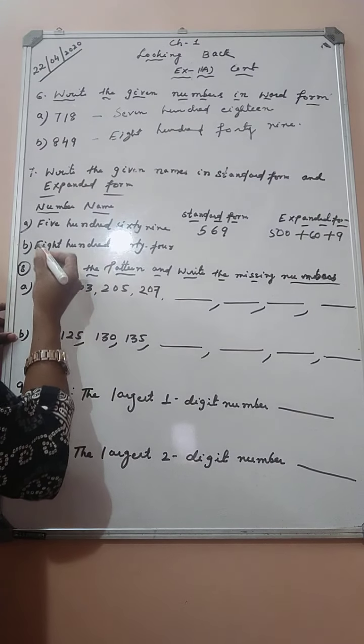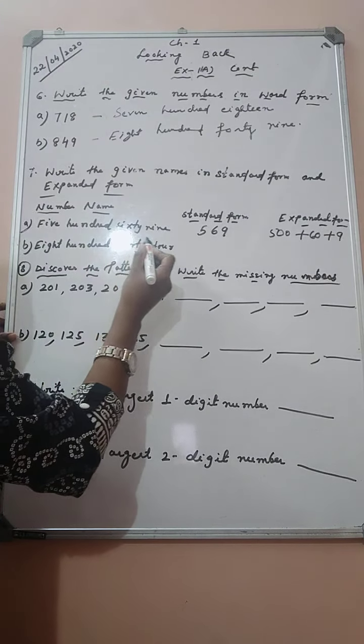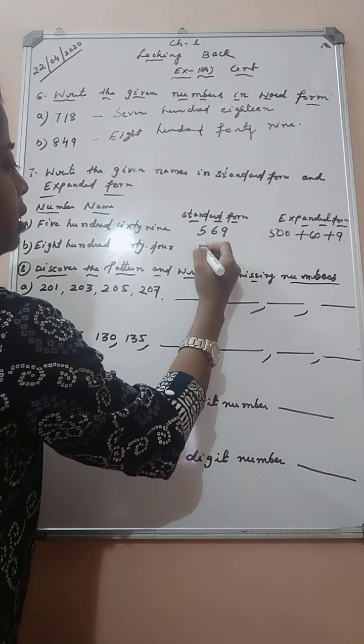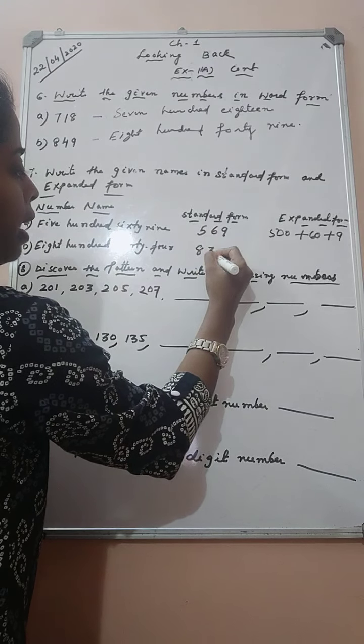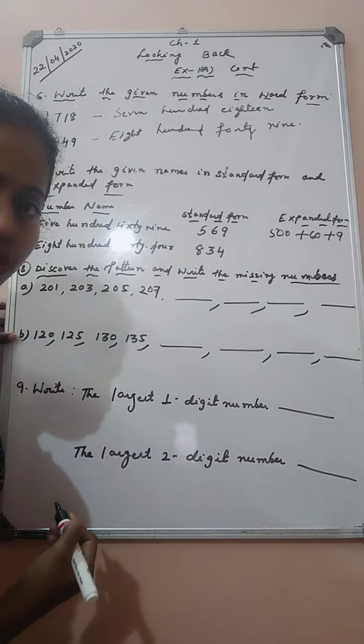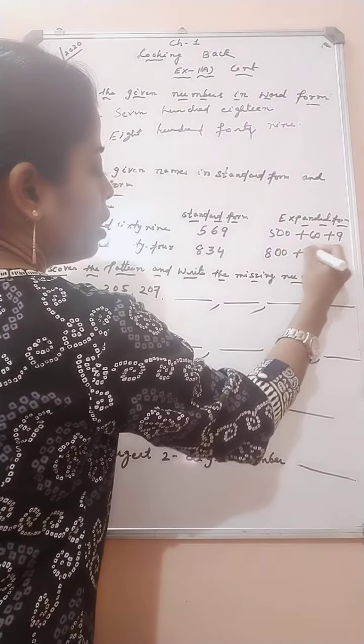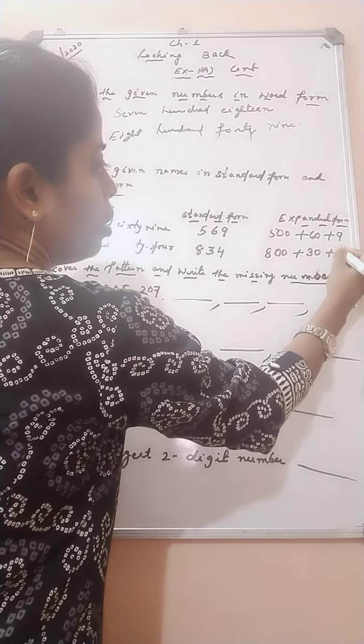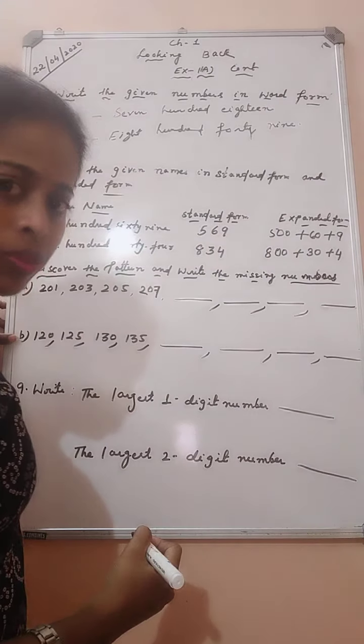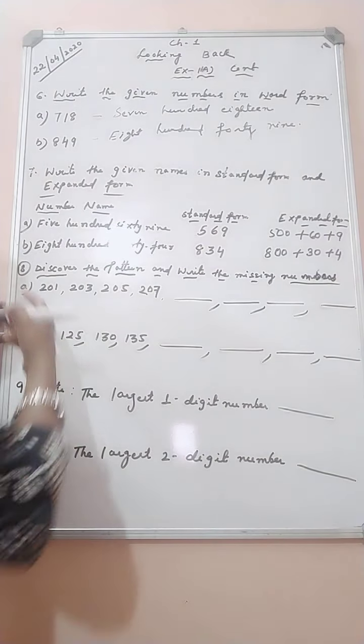Next question, 834. So it can be written in the standard form as 834. Expanded form, 800 plus 30 plus 4. Okay. Our next question.